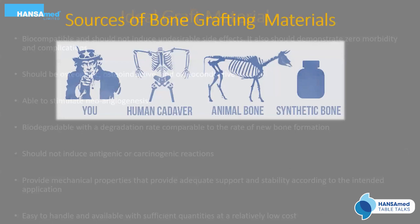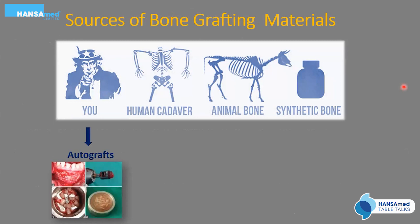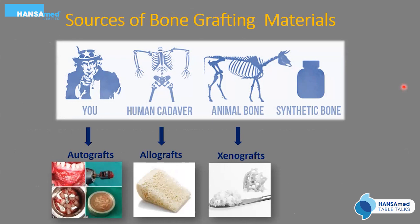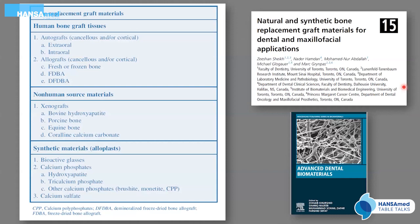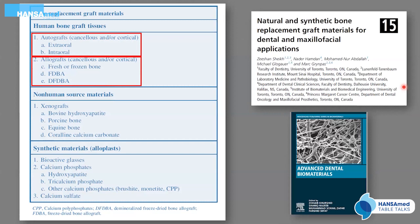Sources of bone grafting materials include autografts — taken from the same individual; allografts — from human cadavers; xenografts — from animal sources; and alloplasts — synthetic graft materials. Autografts can be extraoral or intraoral. Allografts include freeze-dried bone allografts (FDBA) and demineralized freeze-dried bone allografts (DFDBA). Xenografts can be porcine, bovine, equine, or coralline calcium carbonate. Alloplasts include bioactive glasses, various calcium phosphates, and calcium sulfates.